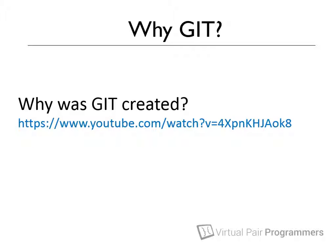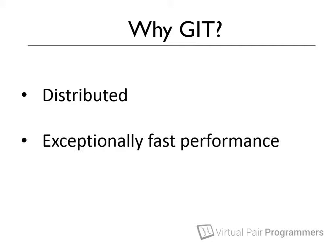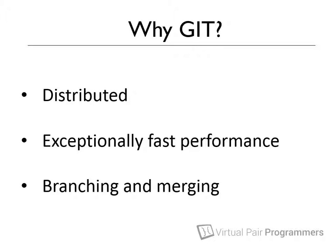As we go through the course, we're going to highlight ways in which Git differs from these other systems. A few things that might distinguish Git from the change management tools you might have used in the past are that it is distributed — in other words, it supports a peer-to-peer collaboration method with no centralized repository. It has exceptionally fast performance for common tasks, and it handles branching and merging with a minimum of fuss. All three of these things we'll be covering in more detail as we go along.